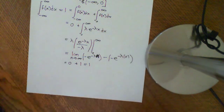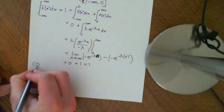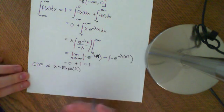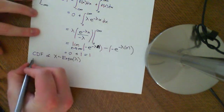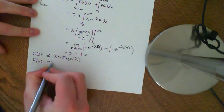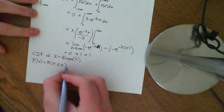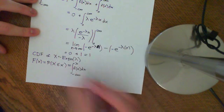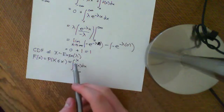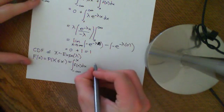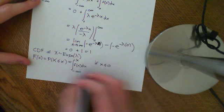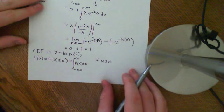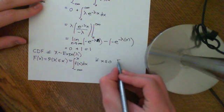Now let's work out the CDF of the exponential distribution. The CDF, big F of x, is defined to be the probability that the random variable X is less than or equal to little x, which equals the integral from negative infinity to x of f(x) dx. If x is less than or equal to 0, this integral equals 0 because you are integrating a function that is identically 0 all along that interval, so big F of x equals 0.